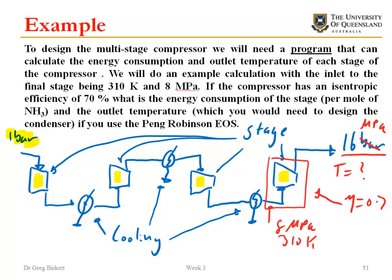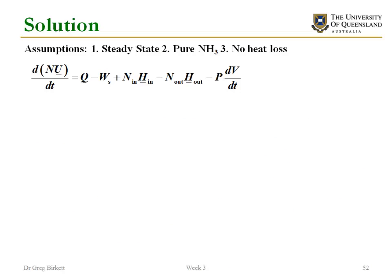We're going to figure out the energy consumption of this stage, so the amount of work per mole of flow. To do this we need to make assumptions about the system: steady state, pure ammonia, and no heat loss. Because we're interested in work and energy we need to use the first law. At steady state all my time dependent terms disappear, there's no heat loss so this disappears. What this gives me then is that my shaft work per unit of molar flow is equal to my enthalpy in minus my enthalpy out. So I'm wanting to calculate the change in enthalpy.